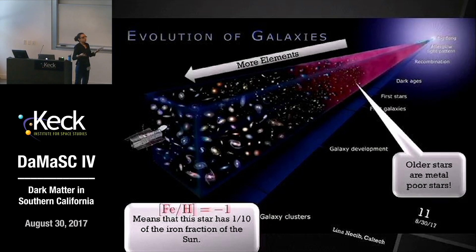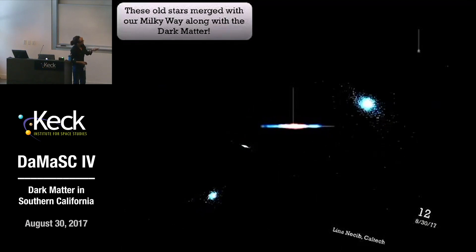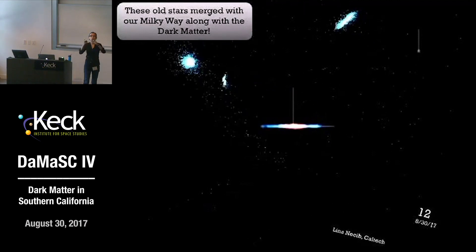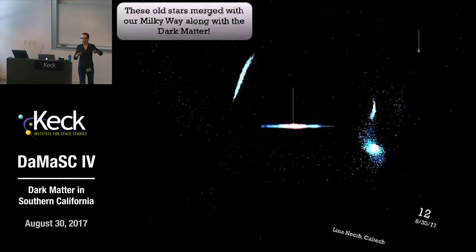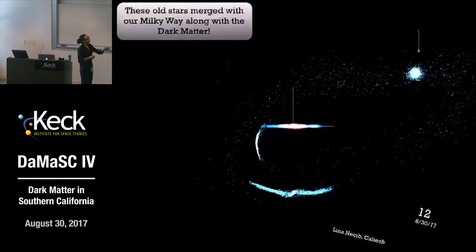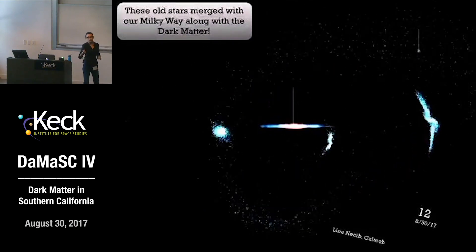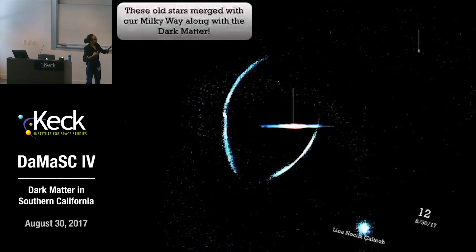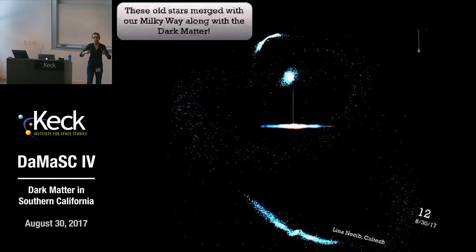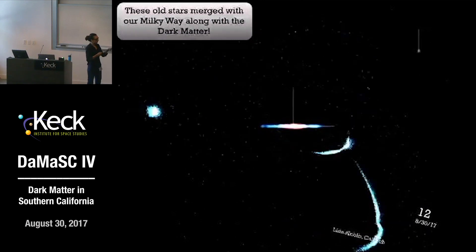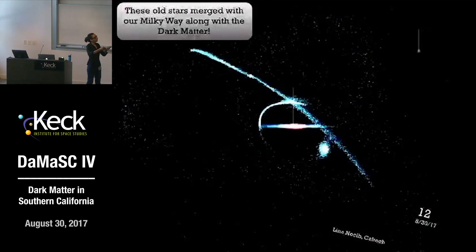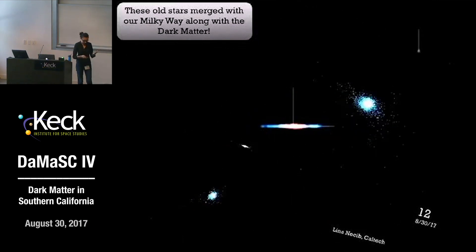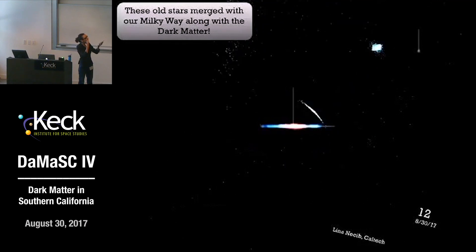Why would these stars behave like dark matter? In the Milky Way today we see streams — groups of stars or dwarf galaxies being tidally stripped as they merge into the Milky Way. The older stars as well as dark matter actually formed through accretion, so much of the dark matter and these old stars formed what we call the stellar halo and the dark matter halo through these accretion events. These older stars therefore have the same formation history, which is why they share kinematic imprinting with dark matter.